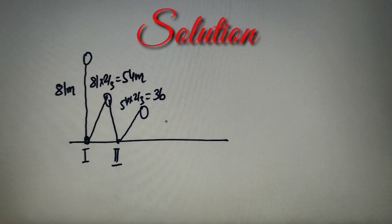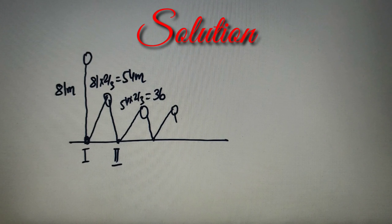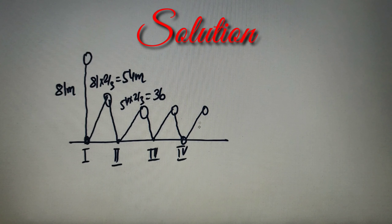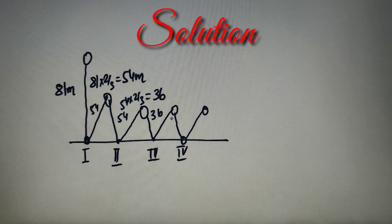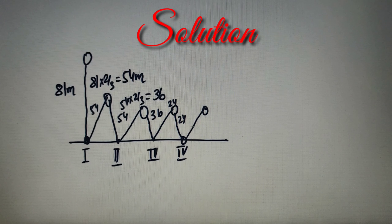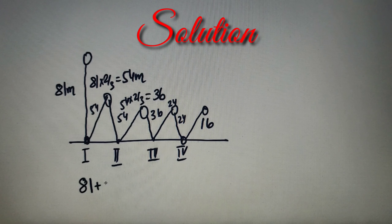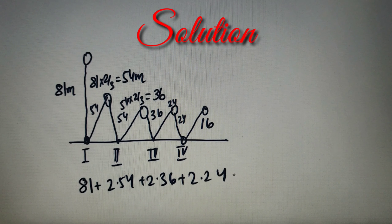Now we have to calculate the total distance when the ball strikes the ground for the fourth time and reaches the topmost position after it. If this is the second strike, this is the third strike, this is the topmost position after the third strike, this is the fourth bounce, and this is the final result we need. So we have distances: 81 downward, then 54 up and 54 down, 36 up and 36 down, 24 up and 24 down — since 36 × (2/3) = 24 — and finally 24 × (2/3) = 16 meters at the top. So we calculate: 81 + 2×54 + 2×36 + 2×24 + 16.